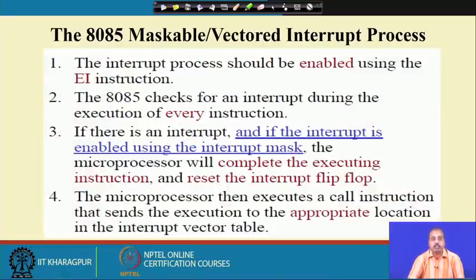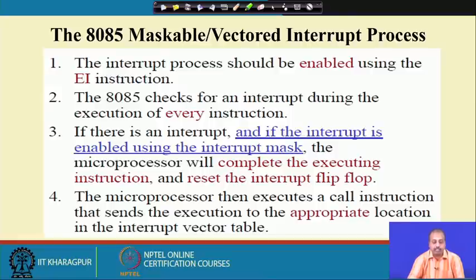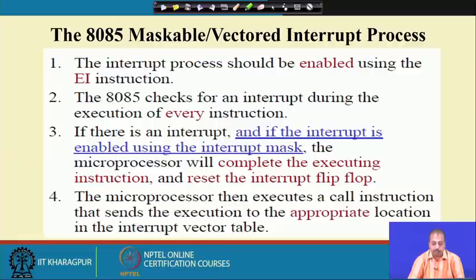As far as the interrupt process is concerned, first the processor has to be enabled through the EI instruction. If EI is not executed, the interrupt enable flip-flop may be 0 and none of the interrupts will reach the processor. The 8085 checks for interrupts during the execution of every instruction, and if there is an interrupt that is enabled by the interrupt mask — checking M 7.5, M 6.5, M 5.5 — only then will it acknowledge the interrupt.